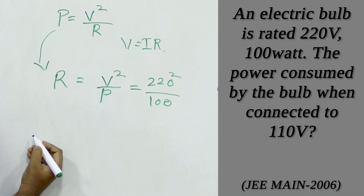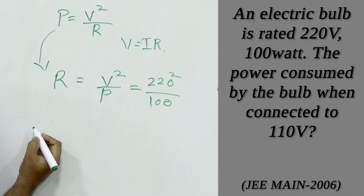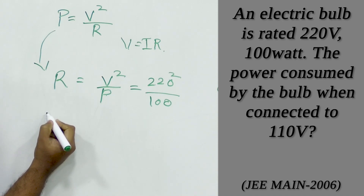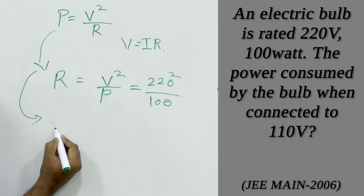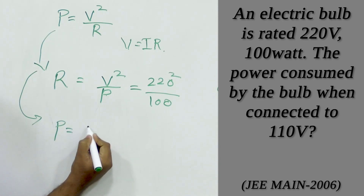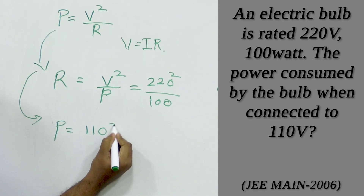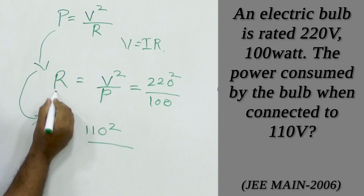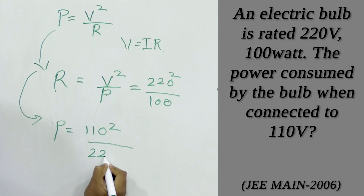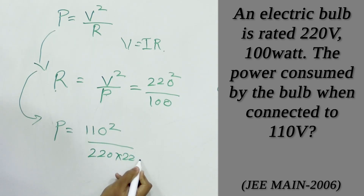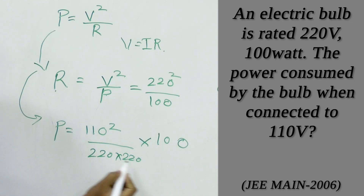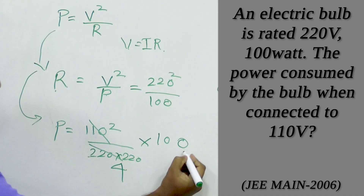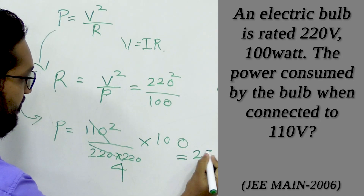Next we have to find out the power consumed by the bulb when 110 volt is given to it, from the same relation: P is equal to 110 volt squared divided by R, where R is 220 squared upon 100. This simplifies to give 100 by 4, which is equal to 25 watt.